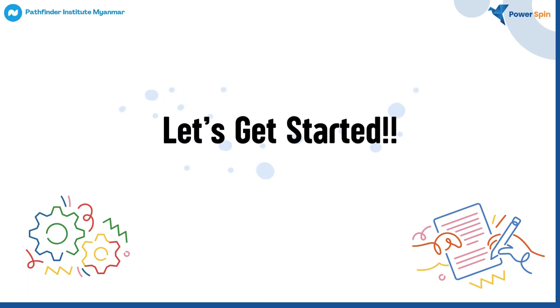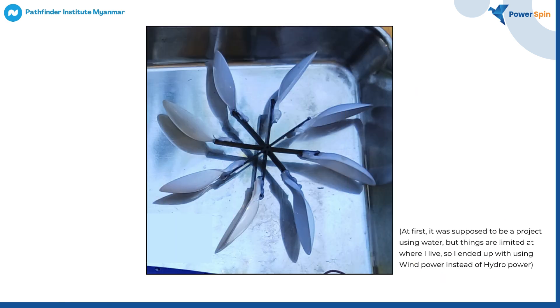Now that I got all the materials, let's get started. First, I created the router blades using plastic spoons, a wheel, and stuck them together using a hot glue gun.